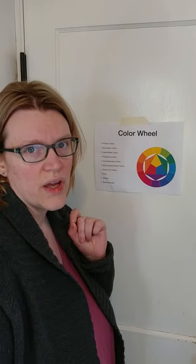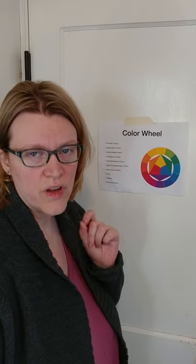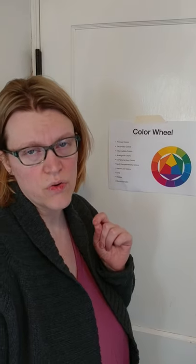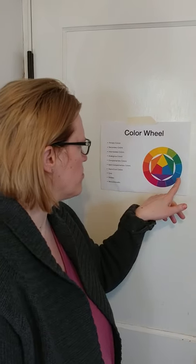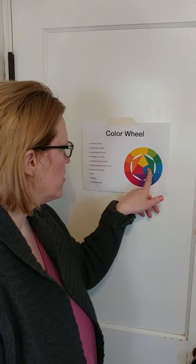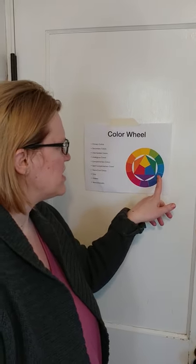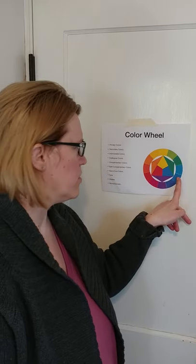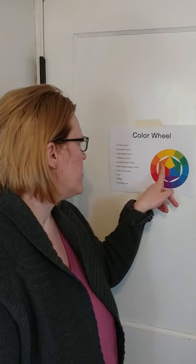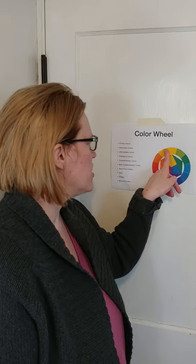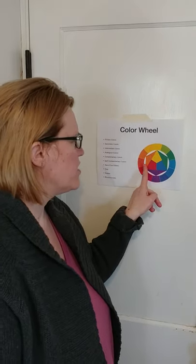You can also complement green — the complement of green is red, and the complement of blue is orange. So if we wanted to split complement on blue, that is going to be your yellow orange and your red orange to make that split complementary on blue.